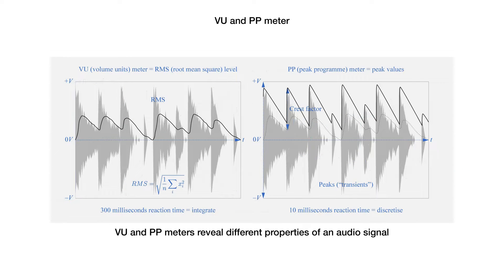Meters that monitor and display a sound's amplitude come in two varieties: volume unit meters and peak program meters. They seem to do the same thing, but they reveal different properties of an audio signal. A volume unit meter displays the average level RMS, and it takes around 300 milliseconds to stabilize. In other words, it's an integrator, averaging the signal over a short period.